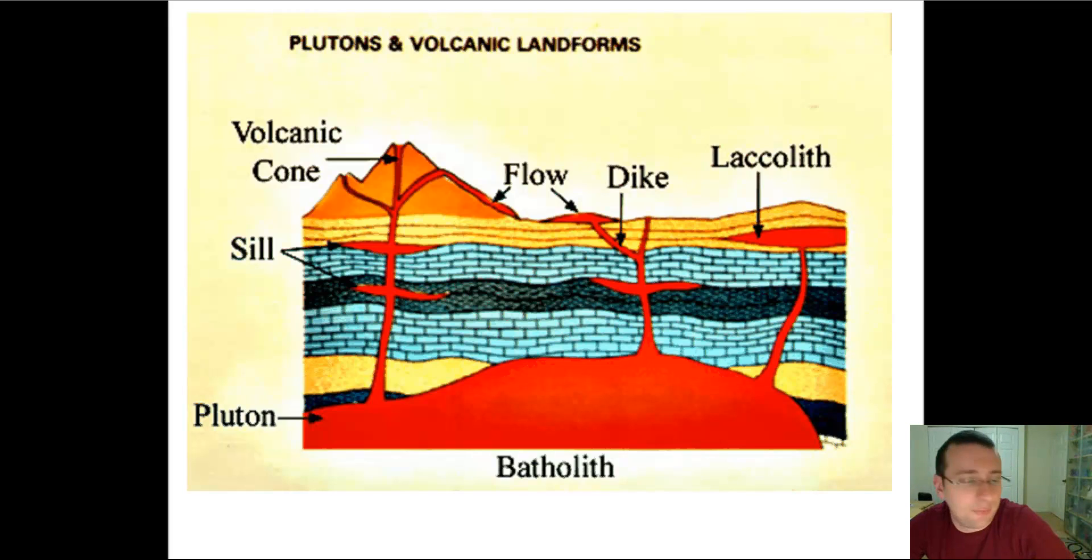Now remember that those sideways intrusions that we talked about are called sills. The vertical intrusions, which are actually usually like kind of an angle, are called dikes. When those things actually hit the surface, we call them flows. If they never hit the surface but kind of gather in a magma chamber close to the surface but smaller than a batholith, we call them laccoliths. Small batholiths are also called stocks sometimes. So something that's not as big as a lava plateau.